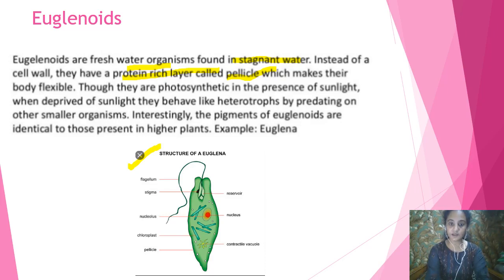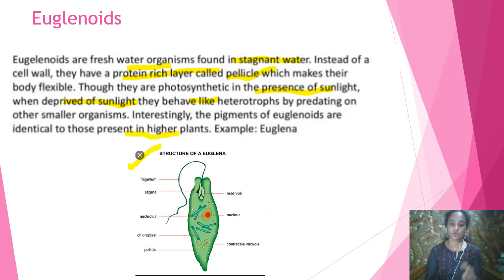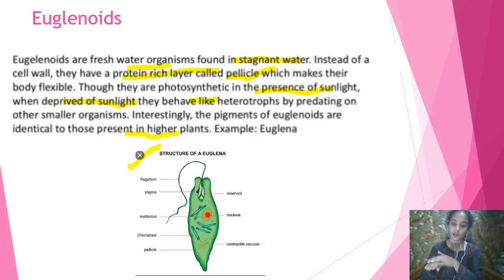Euglenoids are photosynthetic in the presence of sunlight, performing photosynthesis. If sunlight is unavailable, they act as heterotrophs and feed on other organisms. The pigments present in euglenoids resemble those of higher plants. The main identifying character is their flexible body due to the pellicle covering.